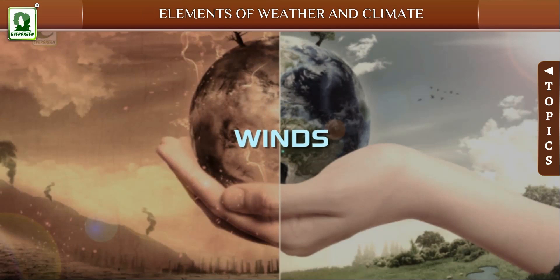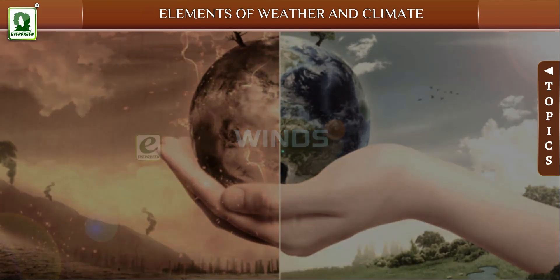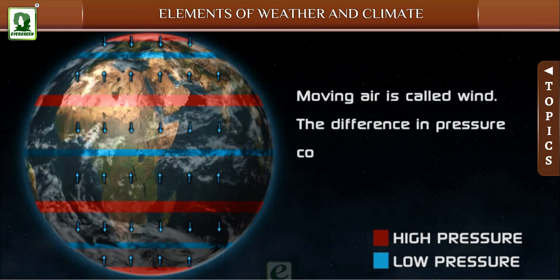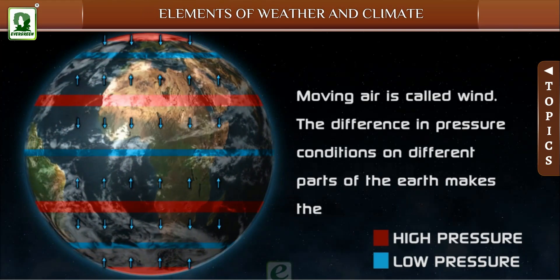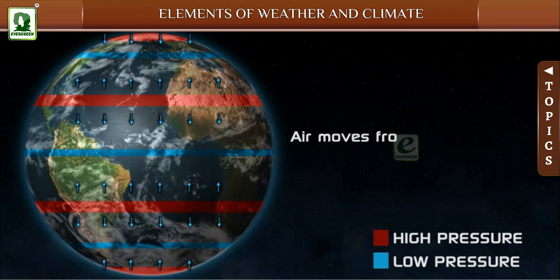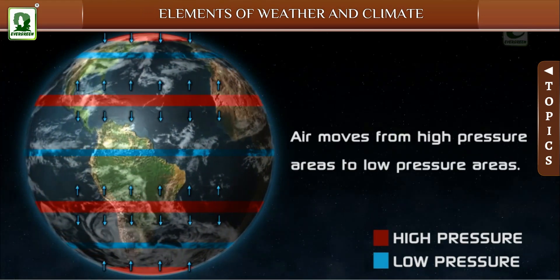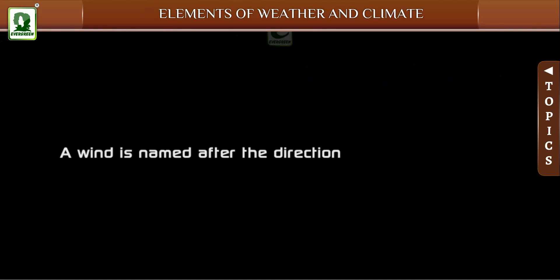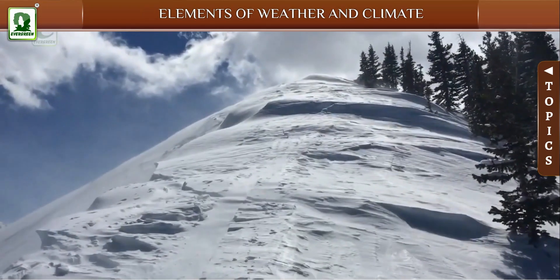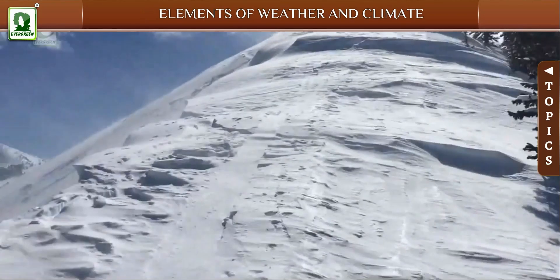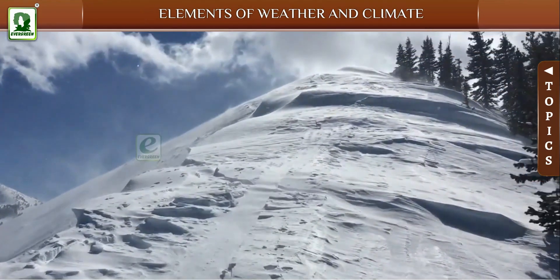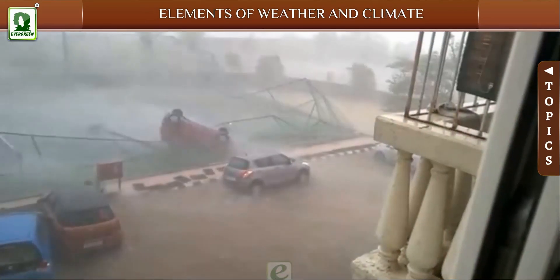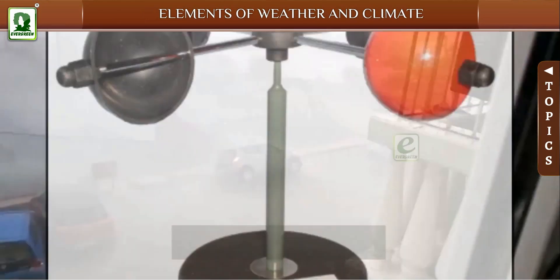Moving air is called wind. The difference in pressure conditions on different parts of the earth makes the air move. Air moves from high pressure areas to low pressure areas. A wind is named after the direction from which it blows. The direction of wind is measured with an instrument called a wind vane, and the speed of wind is measured with an anemometer.